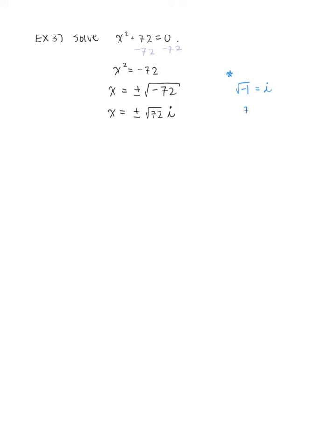Now we simplify. 72 is 2 times 36, which is 2 times 6 squared — so 72 is 6 squared times 2. Rewriting, x equals plus or minus the square root of 6 squared times 2, multiplied by i. Since 6 squared is perfect, this implies x equals plus or minus 6 times the square root of 2 times i. Our proposed solutions are x equals 6√2i or x equals negative 6√2i.